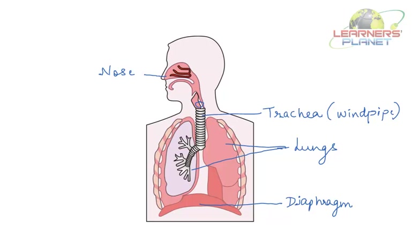Our lungs are amazing. They allow us to breathe, talk, shout at a game, sing, laugh, cry, and more. Our lungs even work with our brain to help us inhale and exhale a larger amount of air at a more rapid rate when we are running or doing vigorous activity — all without even thinking about it.